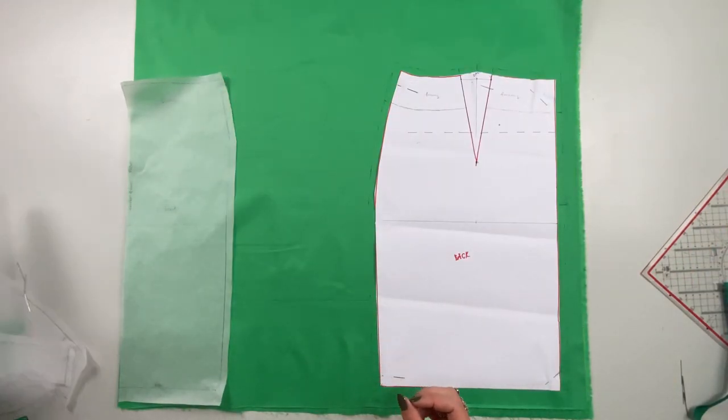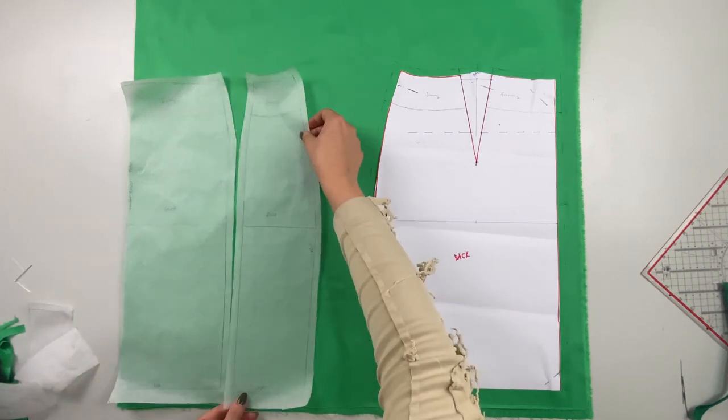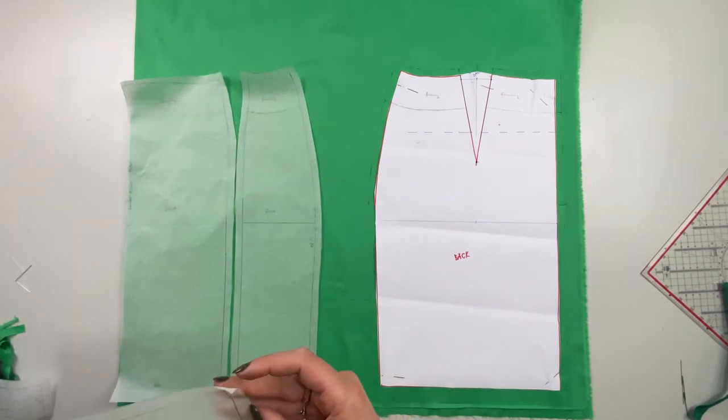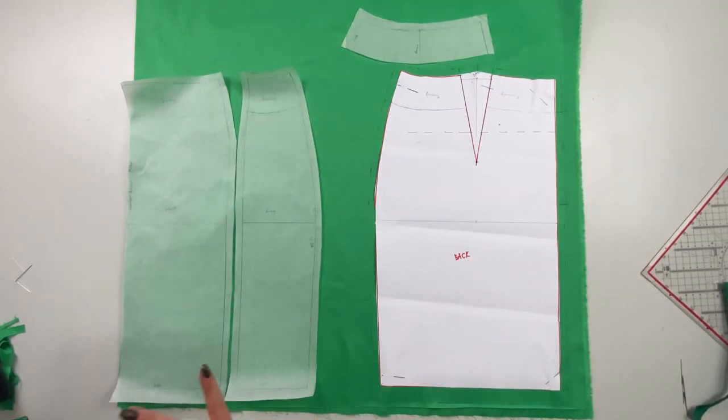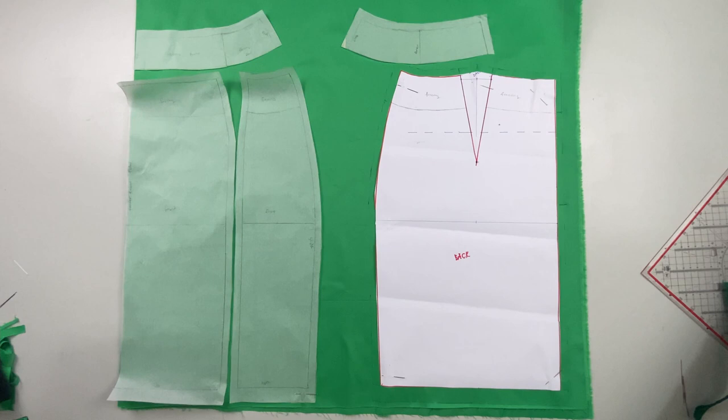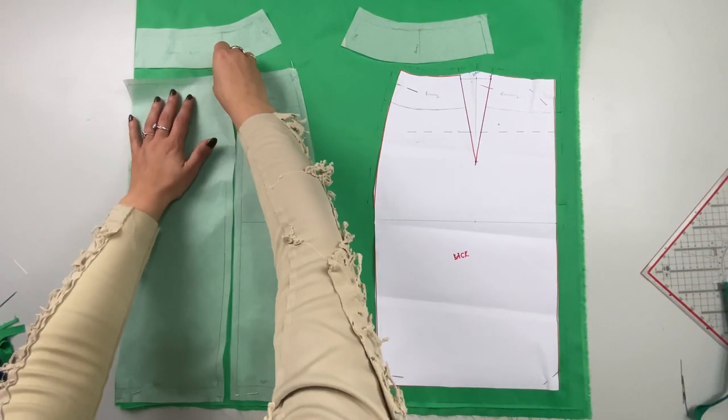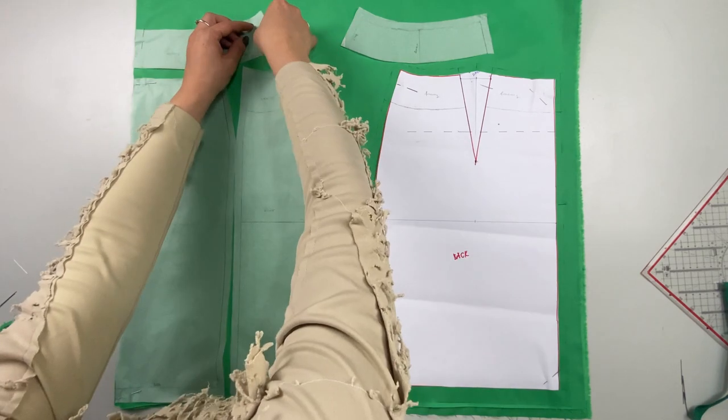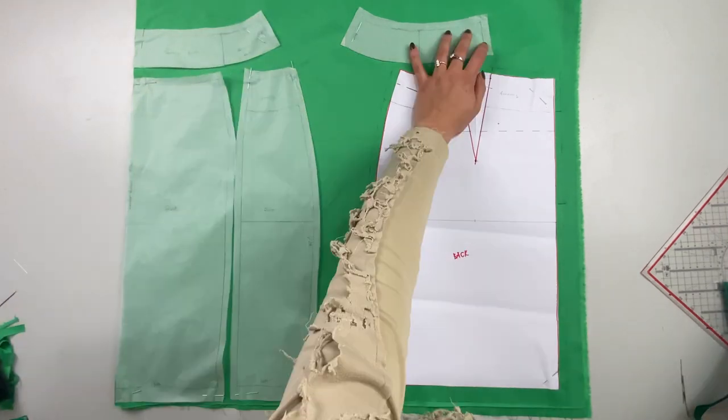All the other pieces have the right seam allowance already included in the pattern. The front middle part of the skirt will be placed on the fold, the side part right next to it. Again also the front middle part of the facing will be placed on the fold. That is why this also doesn't have a seam allowance at the front. Before I cut the fabric I pin the pieces onto the fabric to make sure nothing moves.